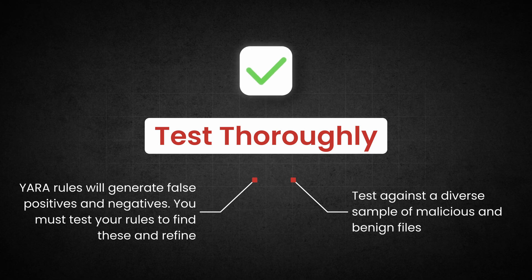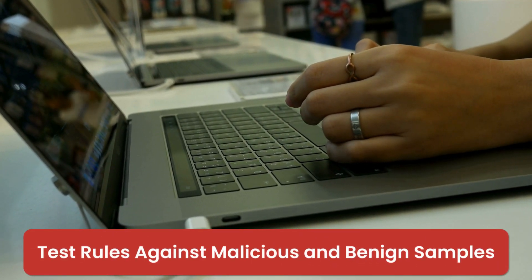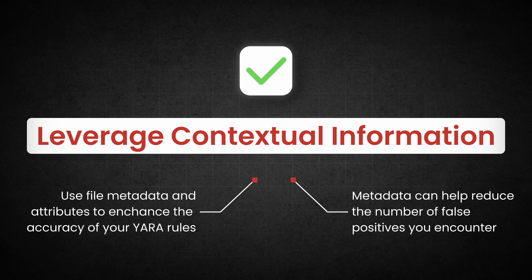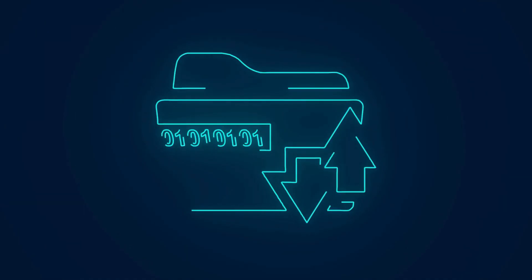Thoroughly test your YARA rules. YARA rules will generate false positives, where they trigger on legitimate binaries, or false negatives, when they don't trigger when you want them to. The only way to find these is to rigorously test your rule against diverse samples, including malicious and benign files. Try to collaborate with others when building YARA rules — the community has been widely adopted by enthusiasts and professionals. Also, leverage contextual information like file metadata and attributes, such as file size or PE header attributes, to instantly filter out non-matching files and enhance accuracy.